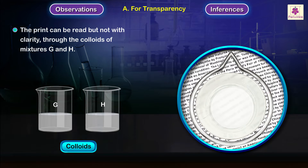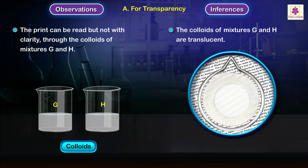The print can be read but not with clarity through the colloids of mixtures G and H. The colloids of mixtures G and H are translucent.